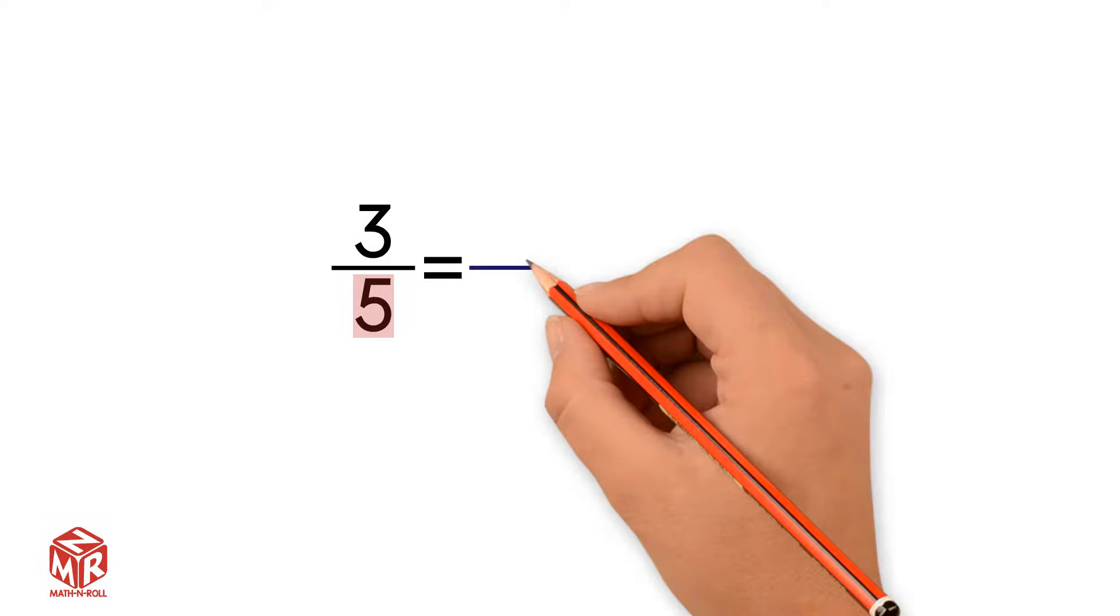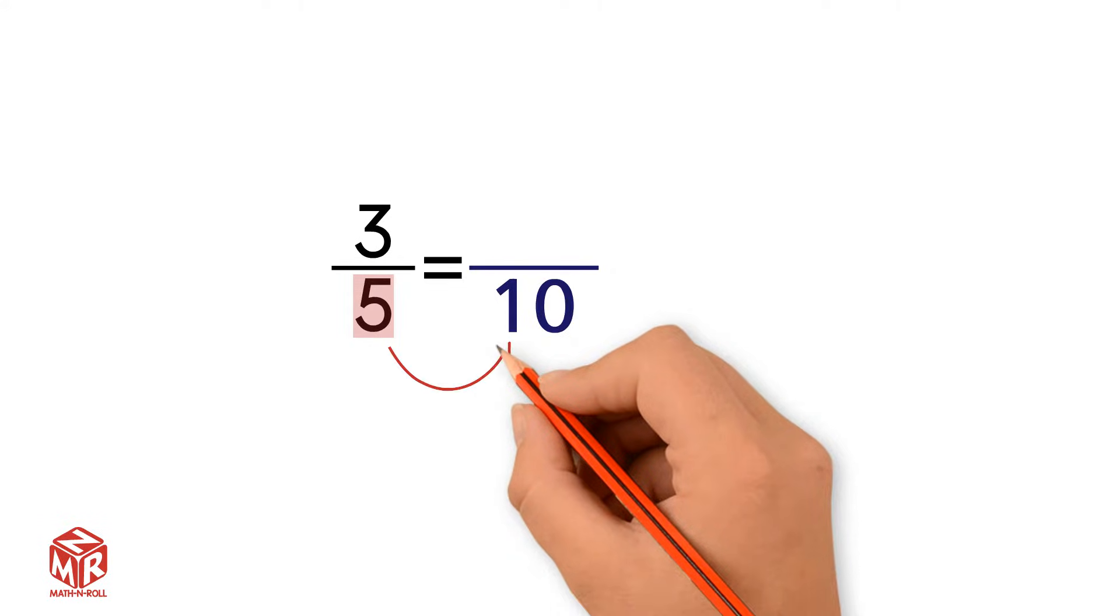Let's take a look at an example, 3 over 5. Our denominator is 5, not 10, not 100, and not 1000. But we can change our denominator to be 10. This would be an equivalent fraction.